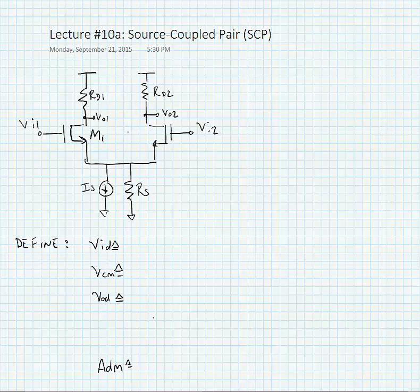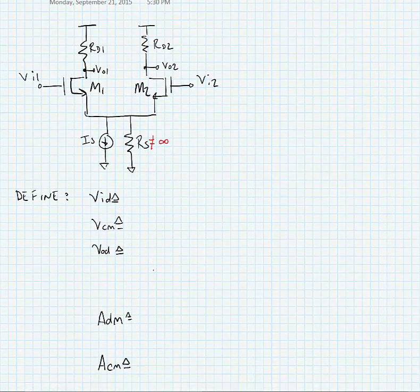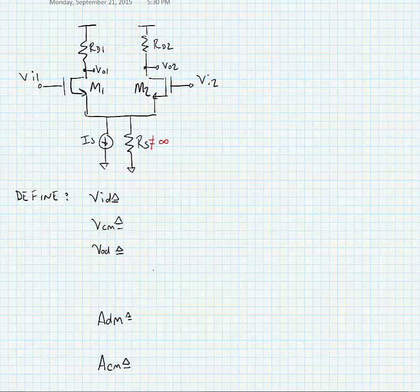It consists of transistors M1 and M2. Each of these transistors is connected at the source via a current source that might be a non-ideal current source. In other words, the resistance RS might not equal infinity. At the drain of the transistors, we have a couple of DC biasing resistors, RD1 and RD2.